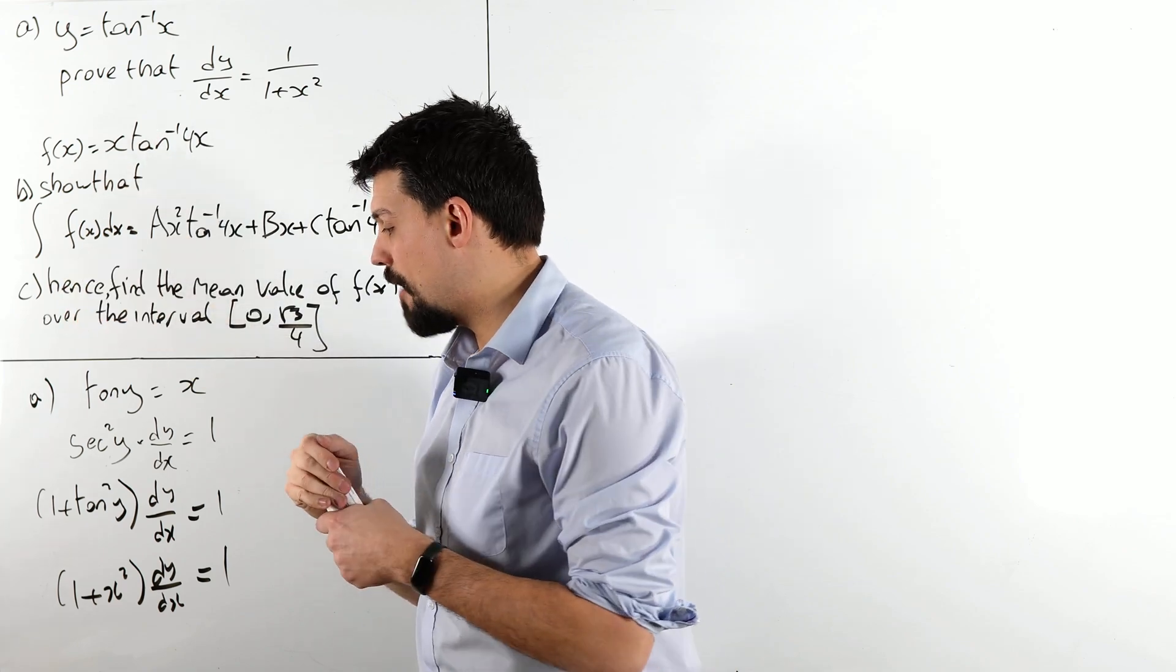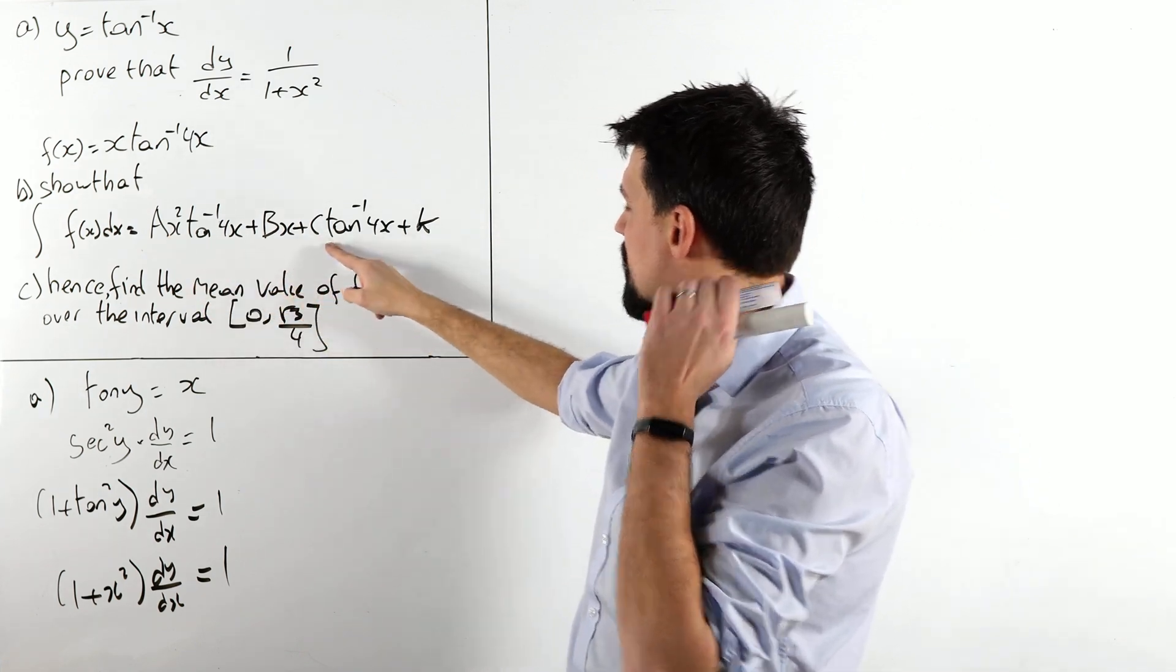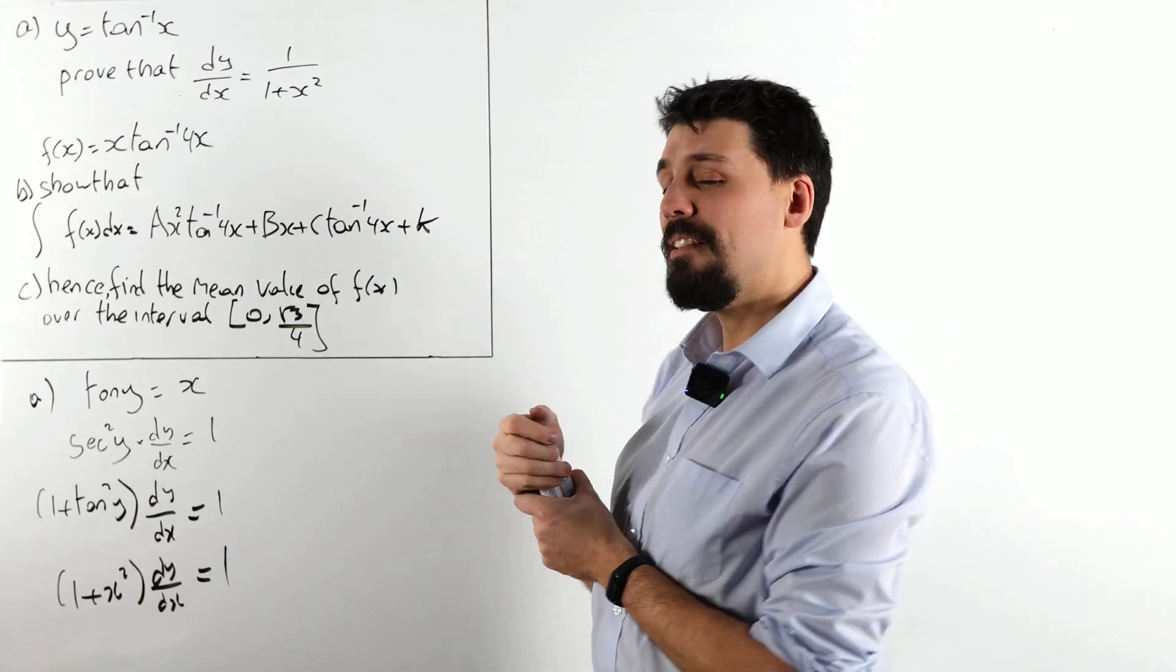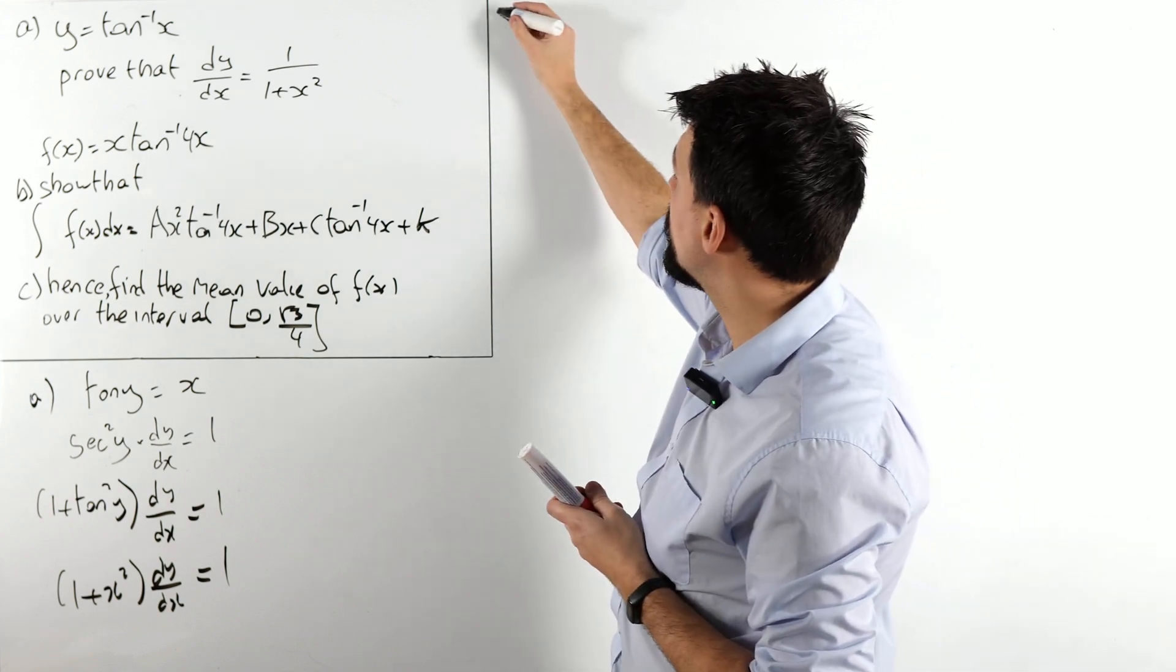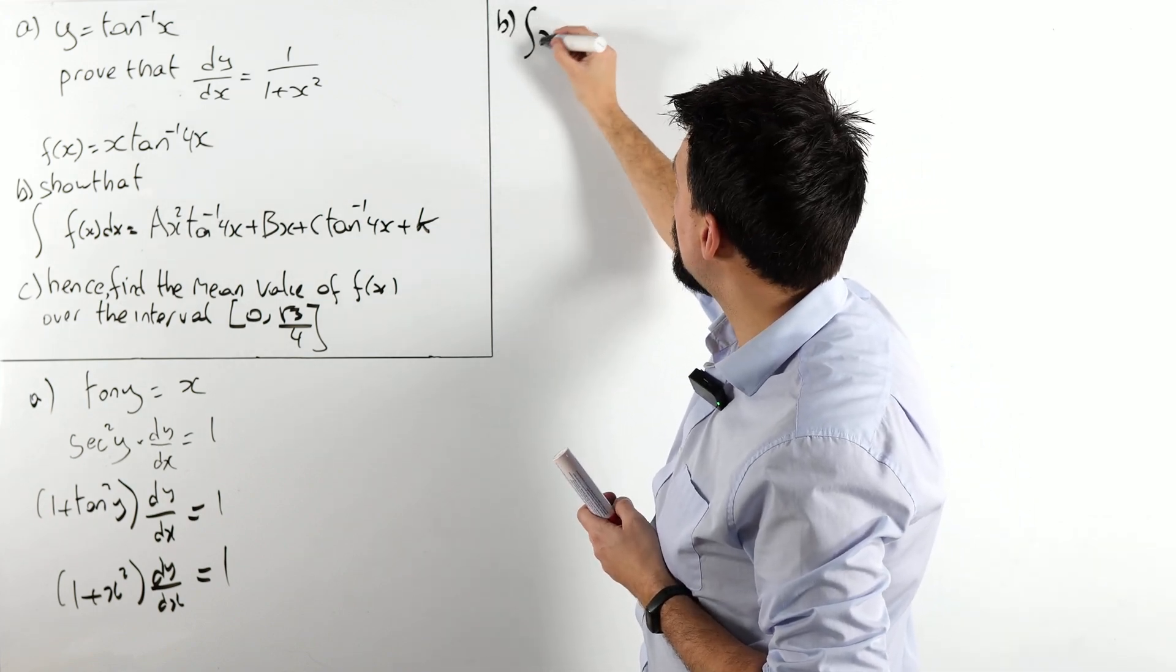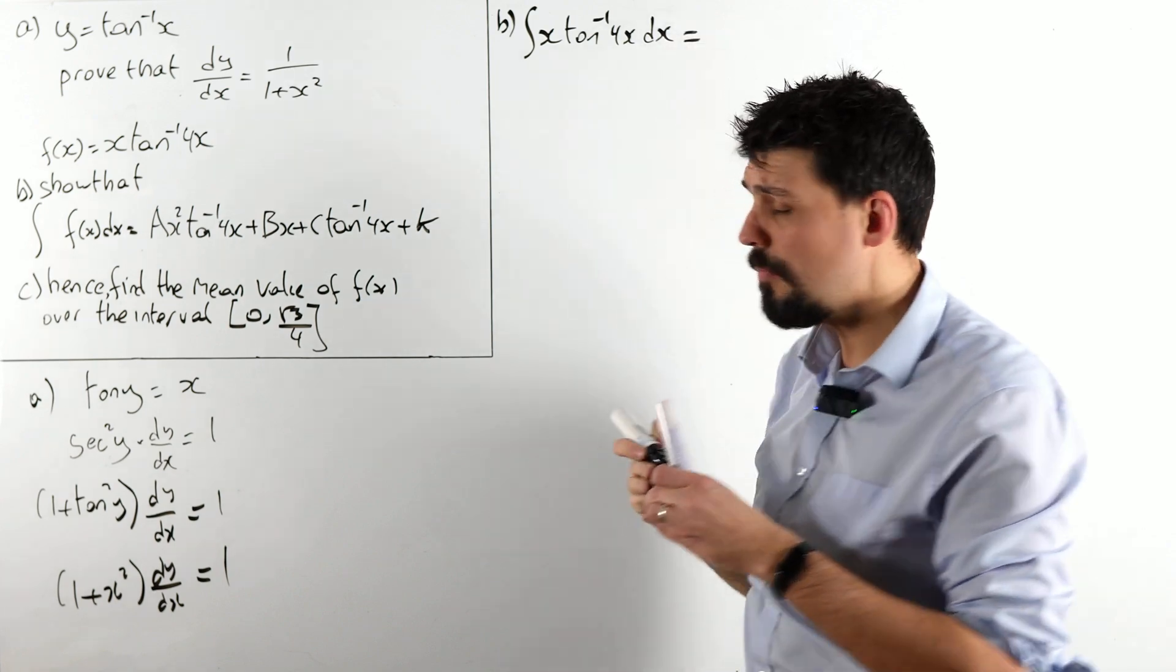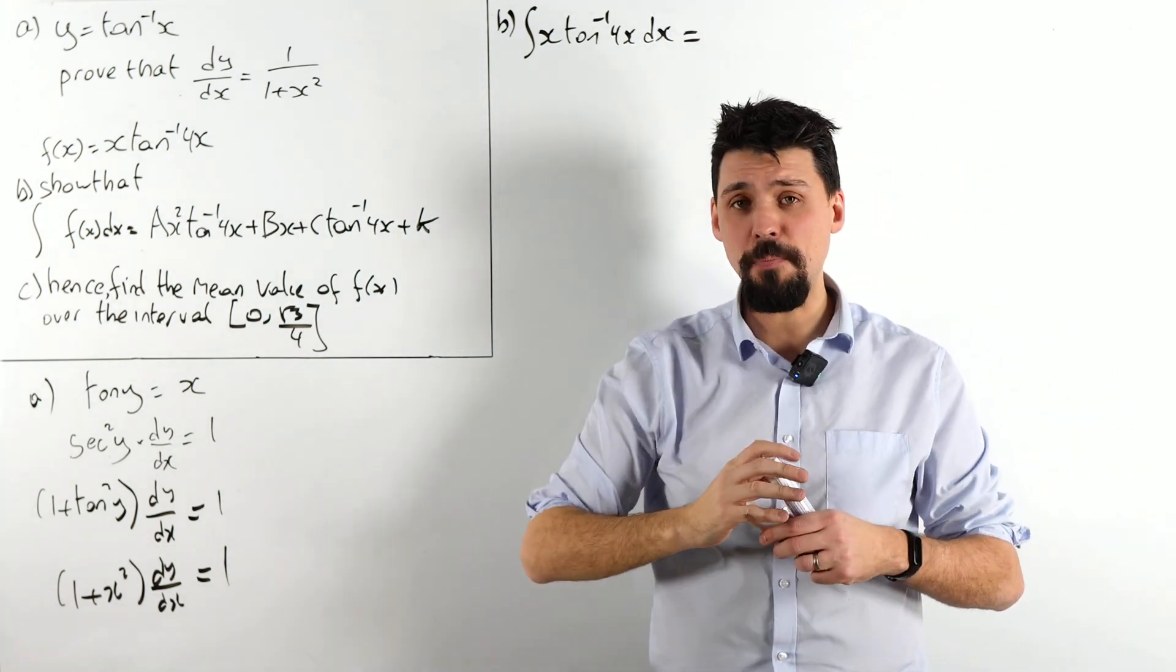Show that if I integrate f of x, I get something looking like this, with an a, a b, and a c, and a k, that I'm going to have to figure out. Probably not the k, that looks distinctly like a constant of integration. So I want to integrate x tan minus 1 of 4x dx.